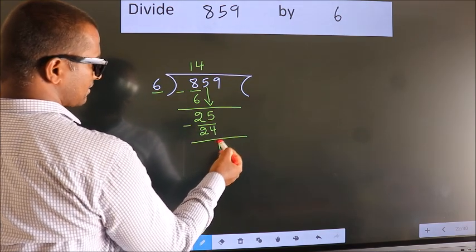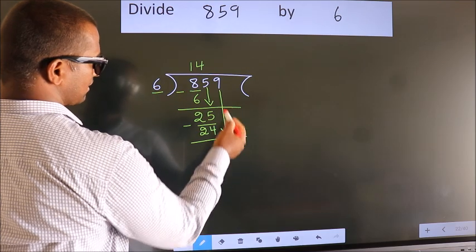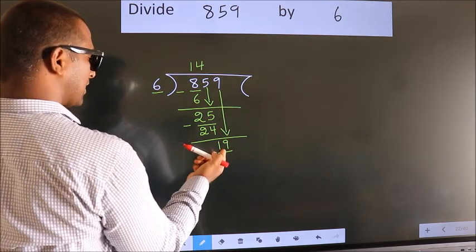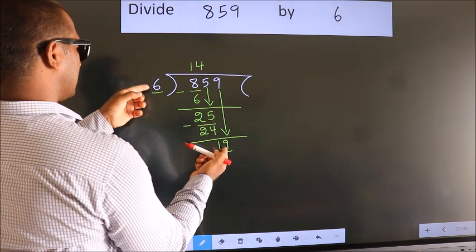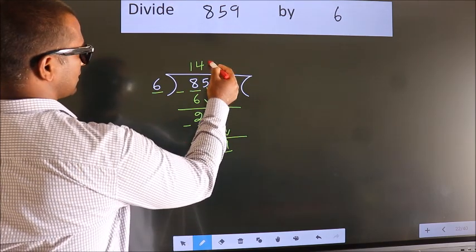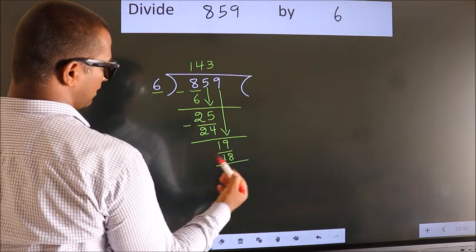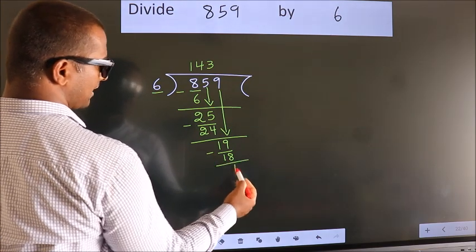After this, bring down the beside number. 9 down, so 19. A number close to 19 in the 6 table is 6 threes are 18. Now we subtract. We get 1.